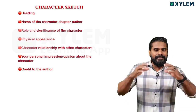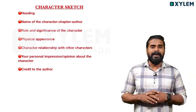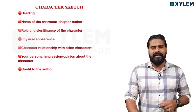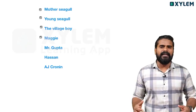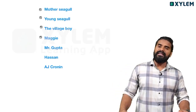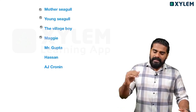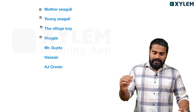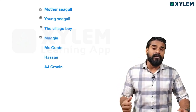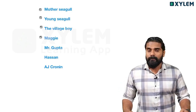If you want to see any characters, we will be able to cover them. The characters in this course include: Mother Seagull, Young Seagull, The Village Boy, and Maggie from 'I Will Fly' and 'Price of Flowers'.